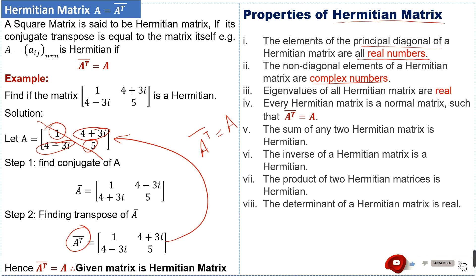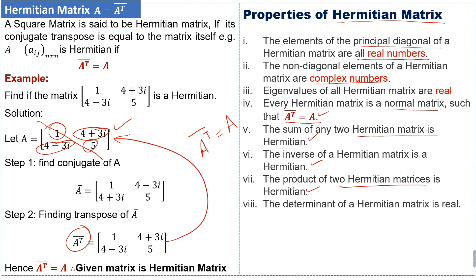Fourth, every Hermitian matrix is a normal matrix, such that the complex conjugate transpose of the matrix equals the matrix itself. Fifth, the sum of any two Hermitian matrices is again a Hermitian matrix. Sixth, the inverse of a Hermitian matrix is also Hermitian. Seventh, the product of two Hermitian matrices is also Hermitian. And finally, the determinant of a Hermitian matrix is real.